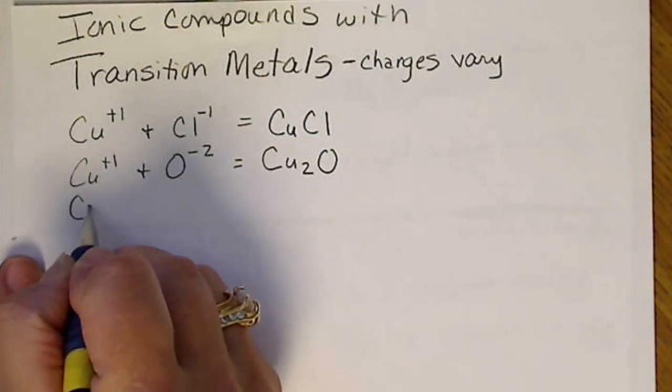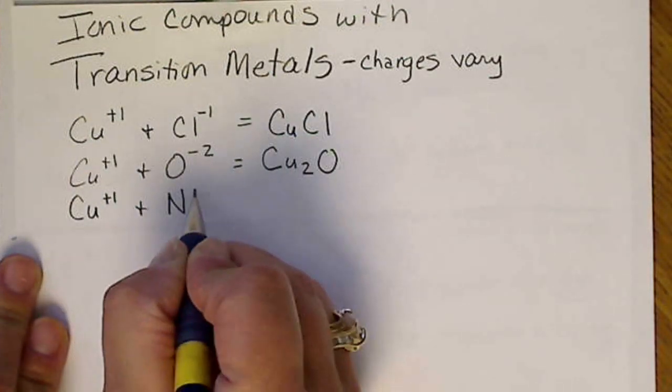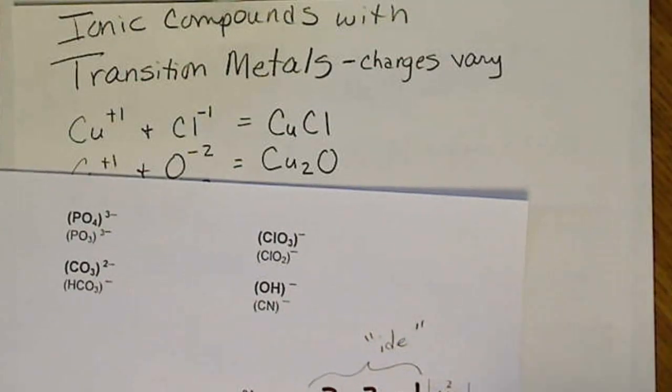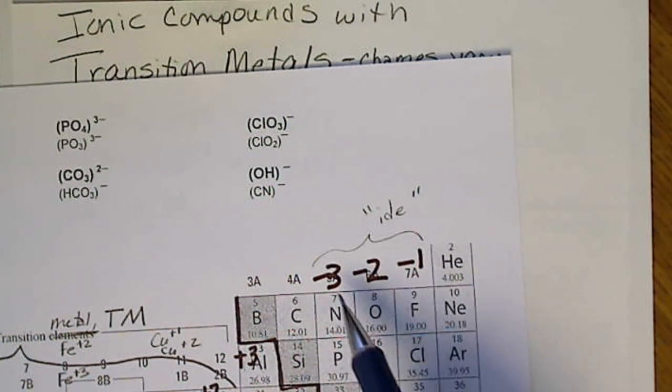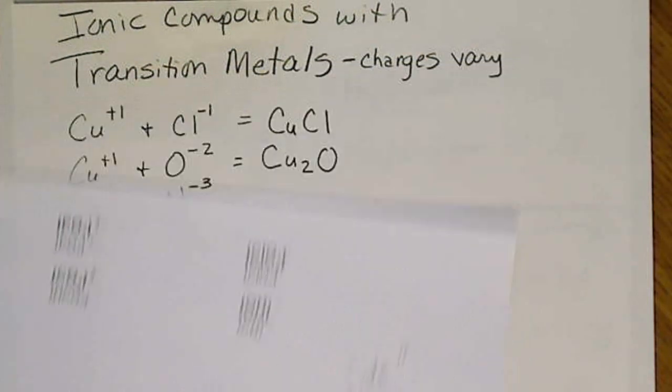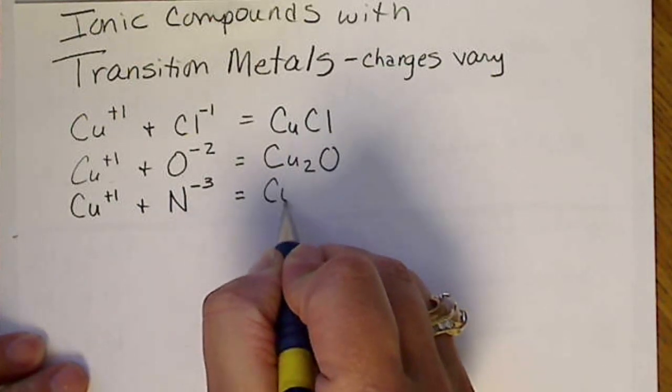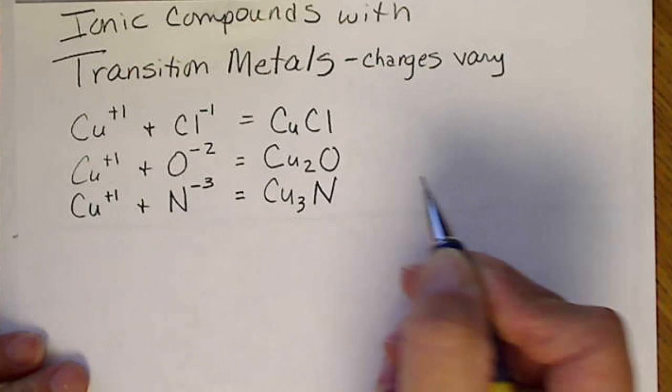And one more example, if copper plus 1 gets together with nitride. Nitrogen is in the minus 3 column, so the charges on chloride, oxide, and nitride come from the charges that we've placed there. So we'll have copper, 3 of those, and 1 nitrogen.